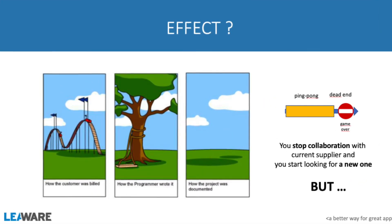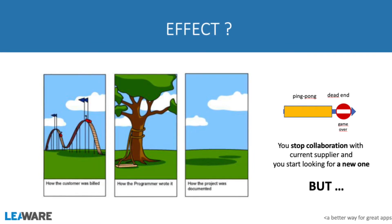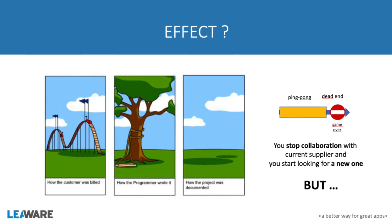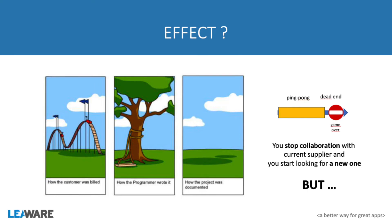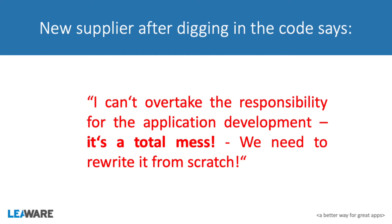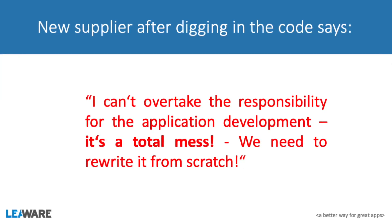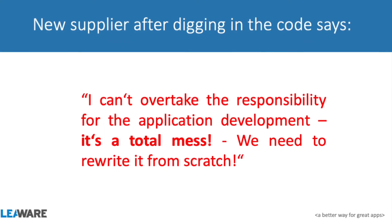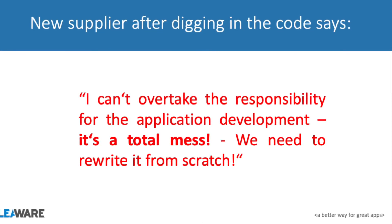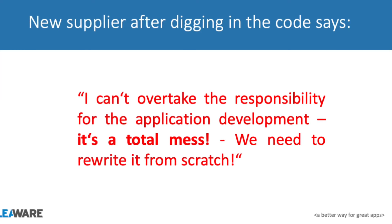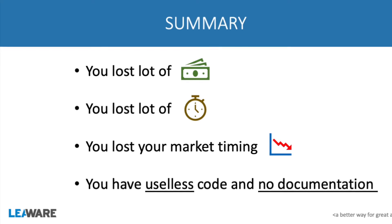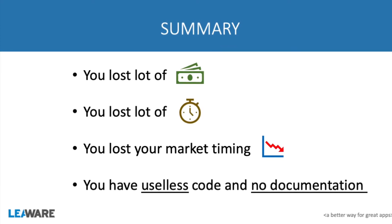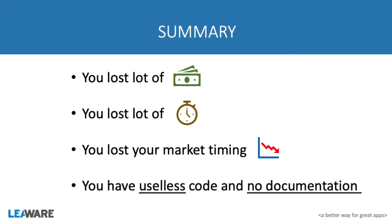The final effect is ping pong, a dead end, a client who is not happy — a client who stops collaboration and tries to find another software house, another bunch of developers. After some time they will find them, but the new supplier, after digging into the code, will probably say: sorry, but I can't take responsibility for this project. The code is a total mess, it's very hard to understand how it works, and the best solution in our opinion is to rewrite it from scratch. As a client, you have lost a lot of money, a lot of time, probably your market timing, and you are left with useless code and no documentation. You are in a really bad situation.